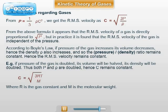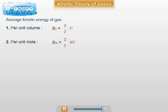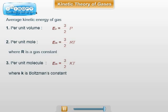From the formula P equals one third ρC², many things can be obtained. With that formula, you can verify Boyle's law. From that formula, you get the average kinetic energy per unit volume, Ev, as 3 by 2 P, or average kinetic energy per mole, Em, as 3 by 2 RT, or average kinetic energy per molecule, Em, as 3 by 2 KT. Hence, students need to remember this formula P equals one third ρC² and different formulae obtained from that formula.